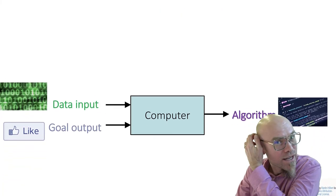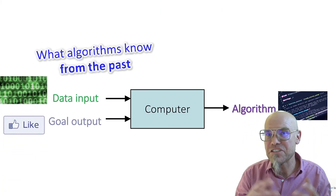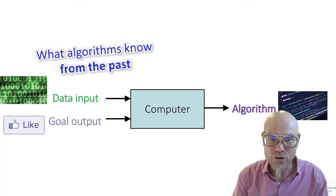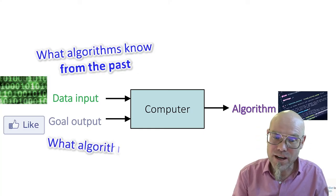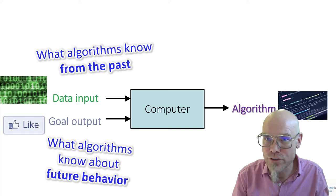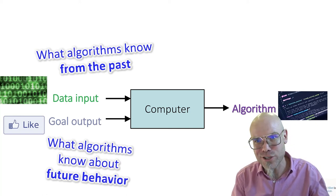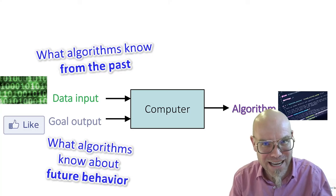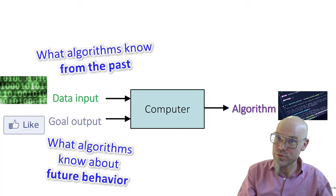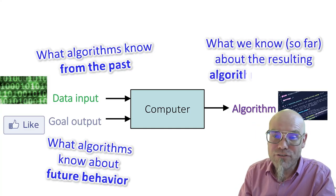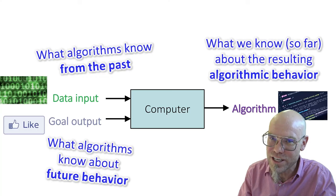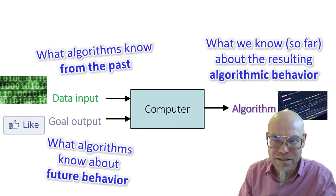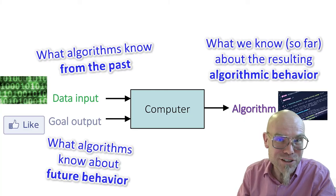We'll use this framework for the rest of the lecture, going around three blocks. First, what algorithms know from the past — the data input — and spoiler alert: they know a lot about you. Second, what algorithms can know about the future: having more data allows better predictions. Third, what we know so far about the resulting algorithmic behavior — we're still in early stages, as the study of machine behavior and algorithmic auditing is very new. Finally, we'll talk about what to do about all of this.